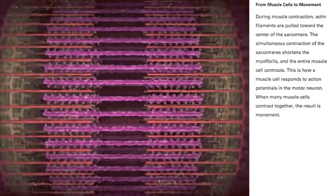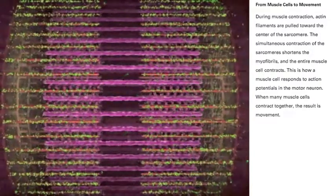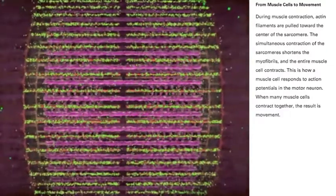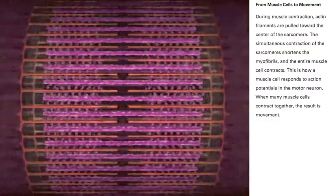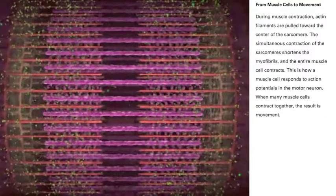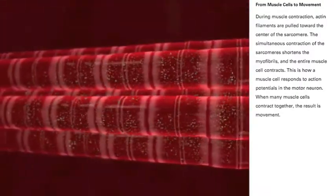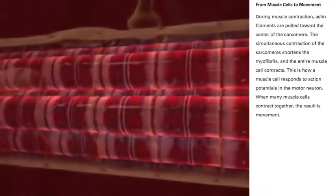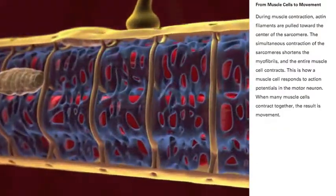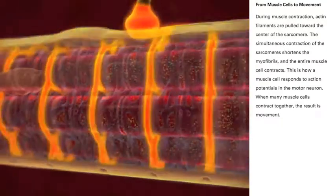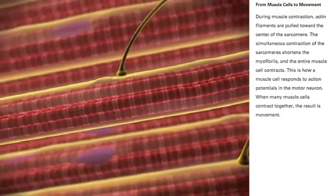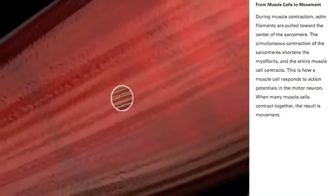During muscle contraction, actin filaments are pulled toward the center of the sarcomere. The simultaneous contraction of the sarcomeres shortens the myofibrils, and the entire muscle cell contracts. This is how a muscle cell responds to action potentials in the motor neuron. When many muscle cells contract together, the result is movement.